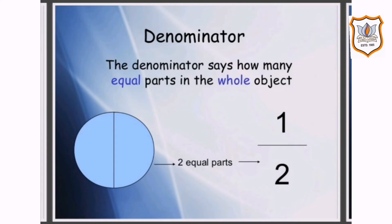Denominator. The denominator says how many equal parts are in the whole object. For example, you can see a circle is given which is divided into two equal parts. So two is the denominator.